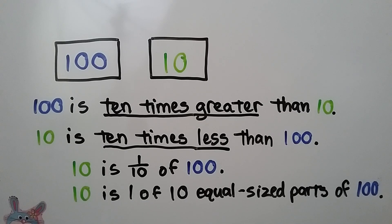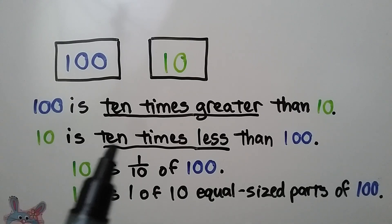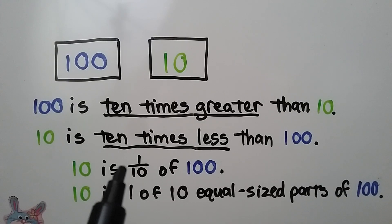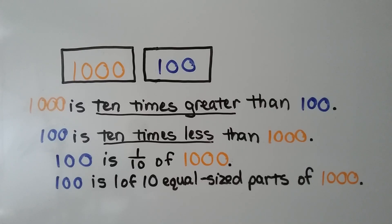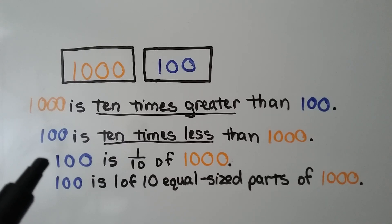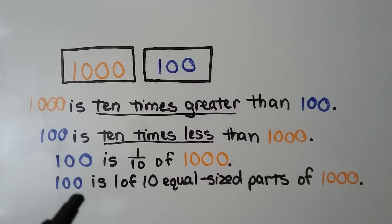100 is 10 times greater than 10, and 10 is 10 times less than 100 — 10 is one-tenth of 100. 10 is one of 10 equal-sized parts of 100. 1,000 is 10 times greater than 100. 100 is 10 times less than 1,000 — 100 is one-tenth of 1,000, one of 10 equal-sized parts of 1,000.